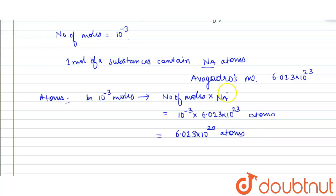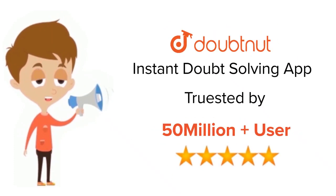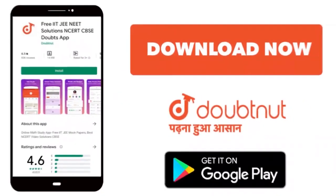So this is the answer. Here it is option C. Thank you. For class 6 to 12, IIT and NEET level, trusted by more than 5 crore students, download Doubtnit app today.